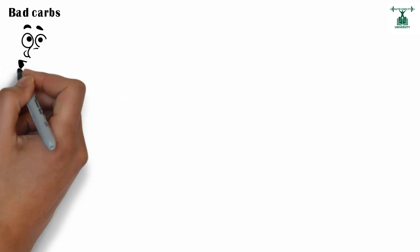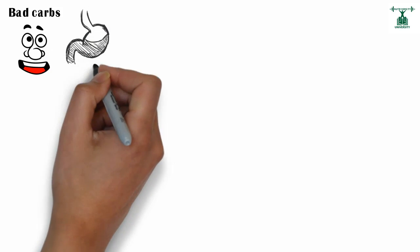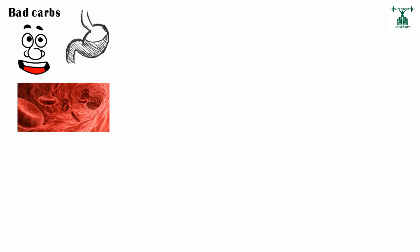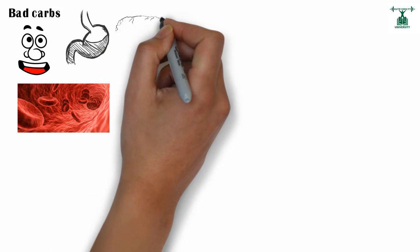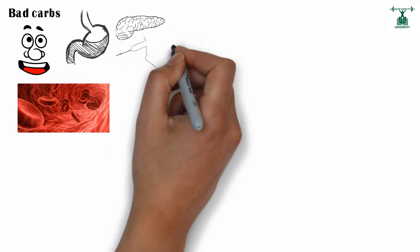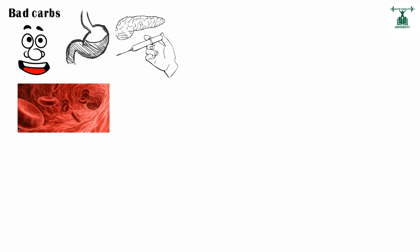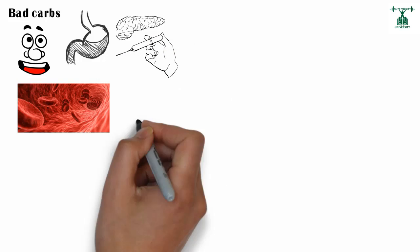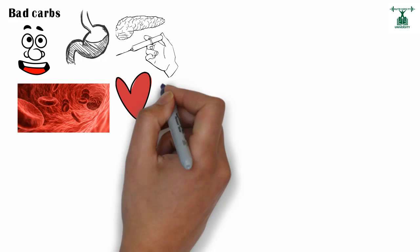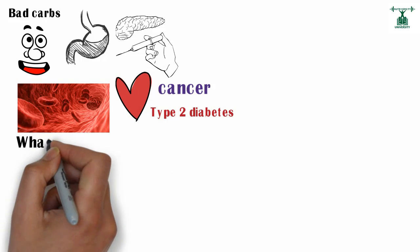Bad carbs cause insulin spikes. They get digested fast and end up in the bloodstream quickly, forcing the pancreas to produce a lot of insulin to deal with the sudden glucose upsurge. Besides causing insulin resistance, bad carbs are linked to heart disease, cancer, and type 2 diabetes.